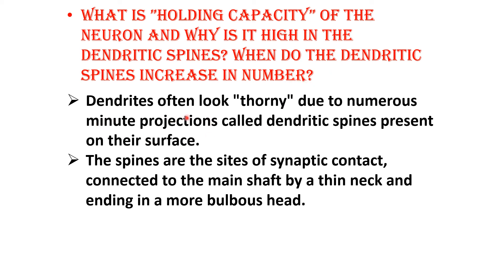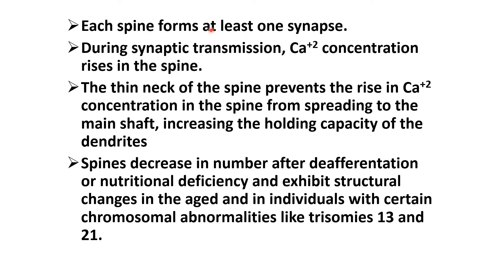Dendrites often look thorny due to numerous minute projections called dendritic spines, which are the sites of synaptic contact connected to the main shaft by a thin neck ending in a more bulbous head, with each spine forming at least one synapse. During synaptic transmission, calcium concentration rises in the spine; the thin neck prevents this from spreading to the main shaft, increasing the holding capacity. Spines decrease in number after deafferentation or nutritional deficiency, and show structural changes in aging and in individuals with chromosomal abnormalities like trisomies 13 and 21.